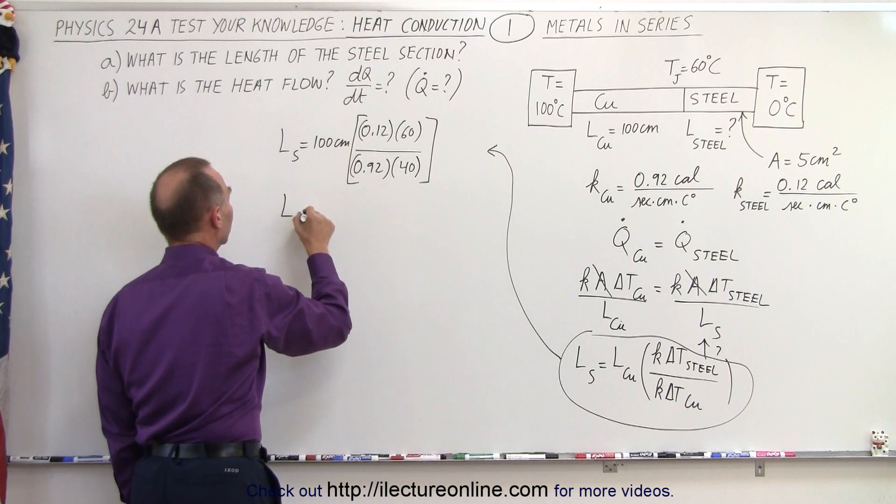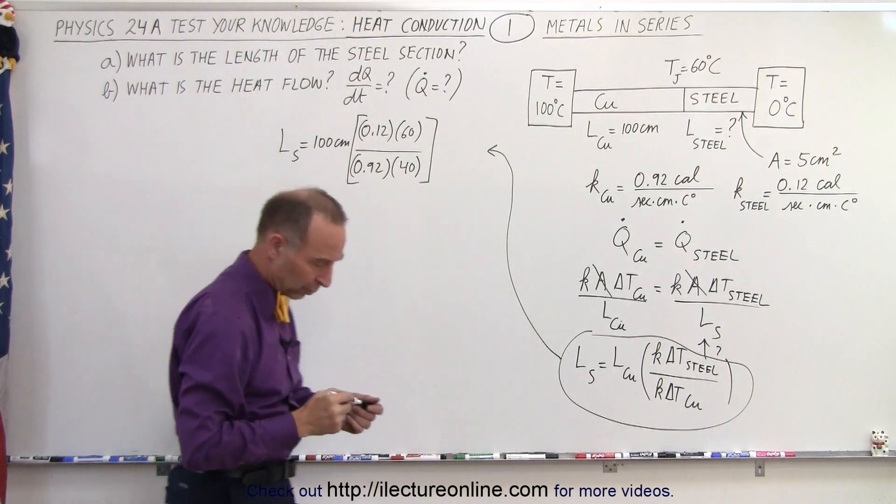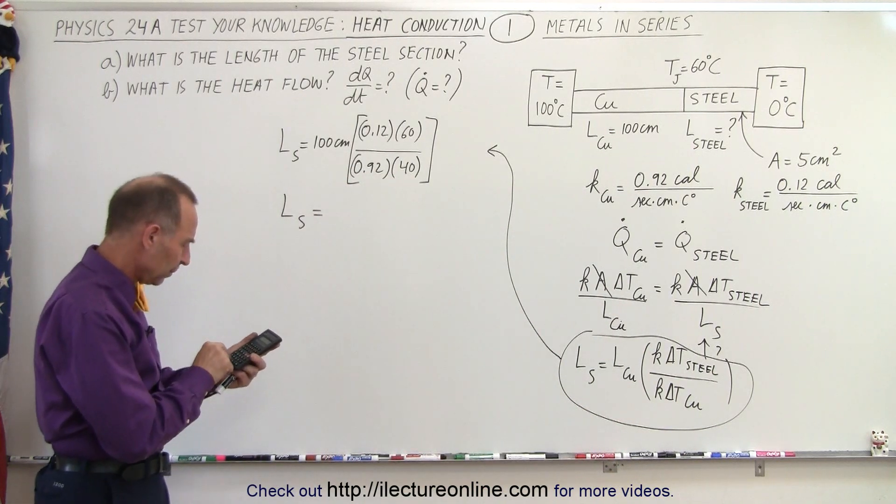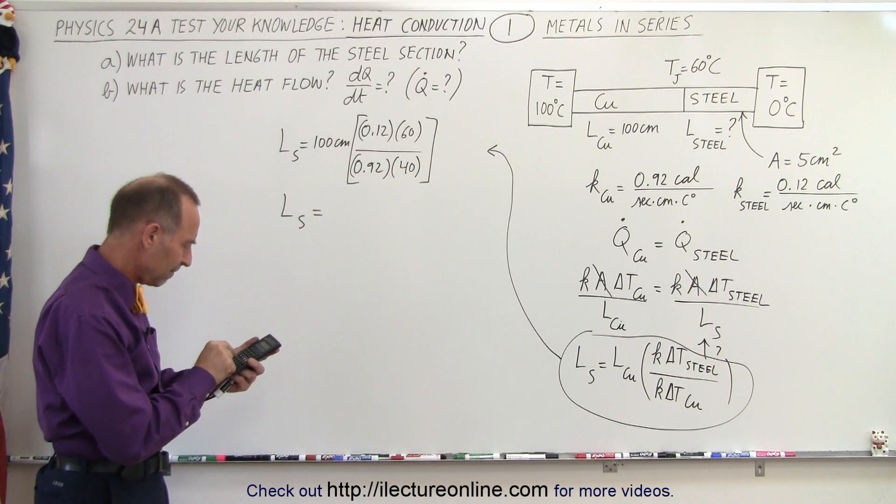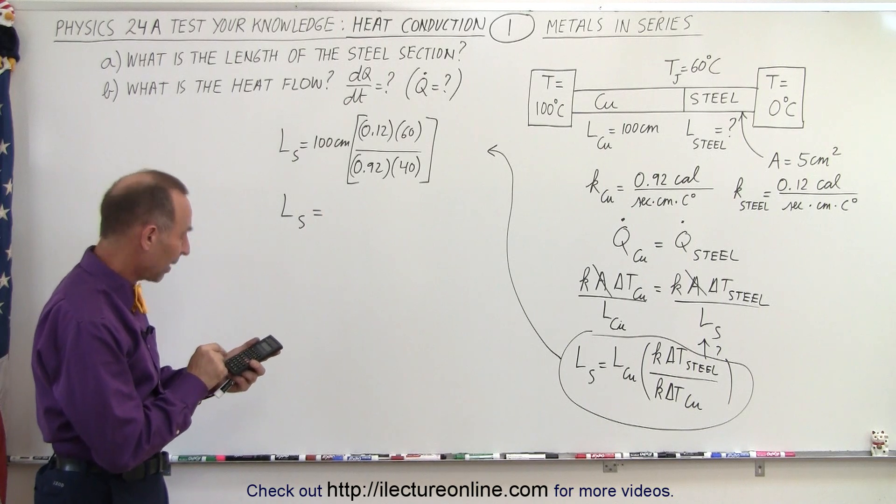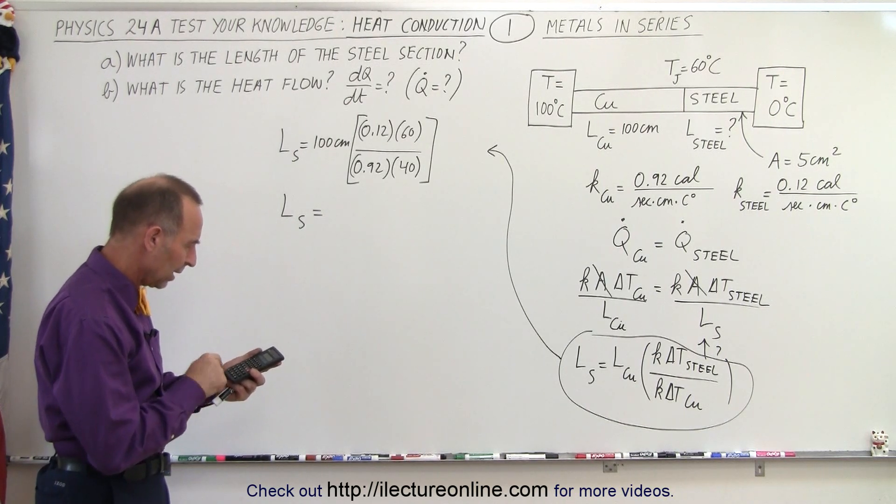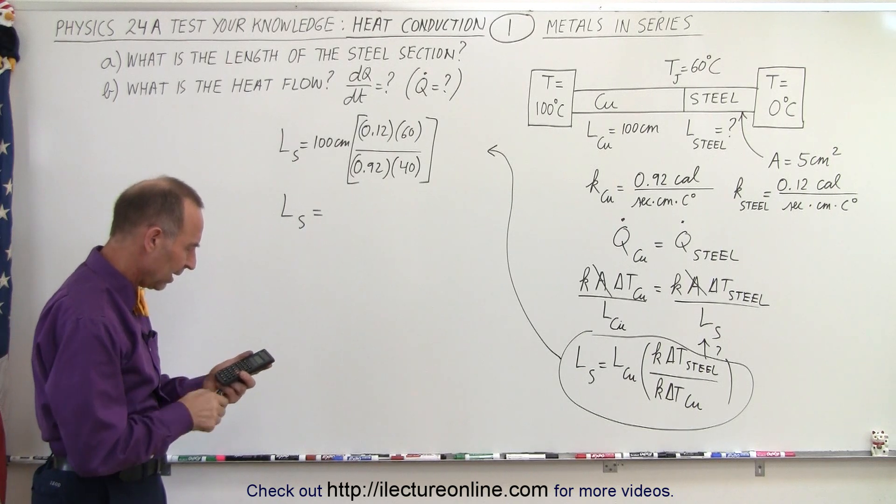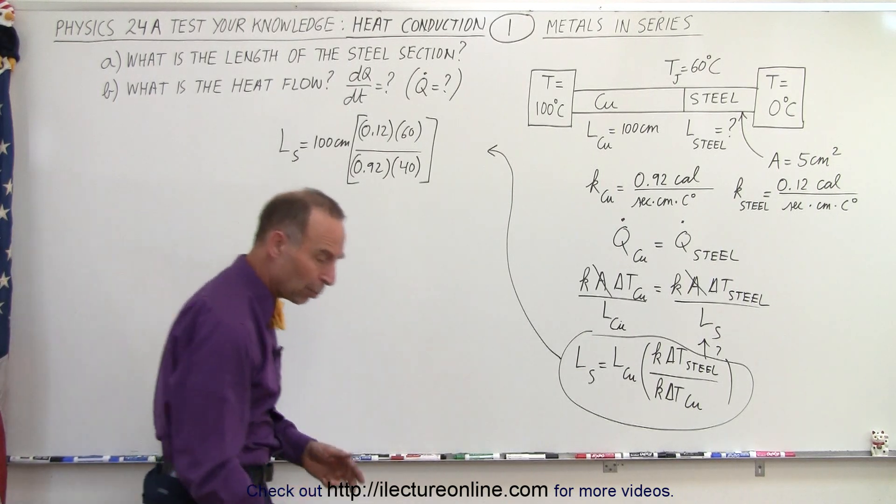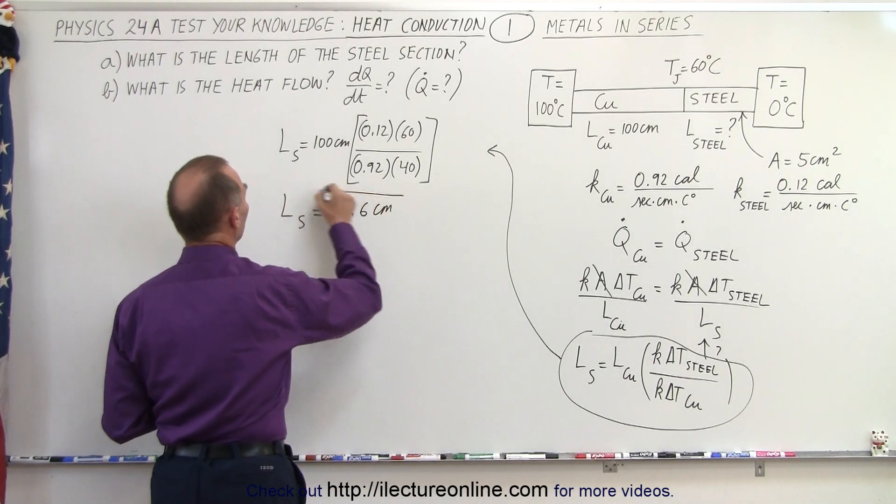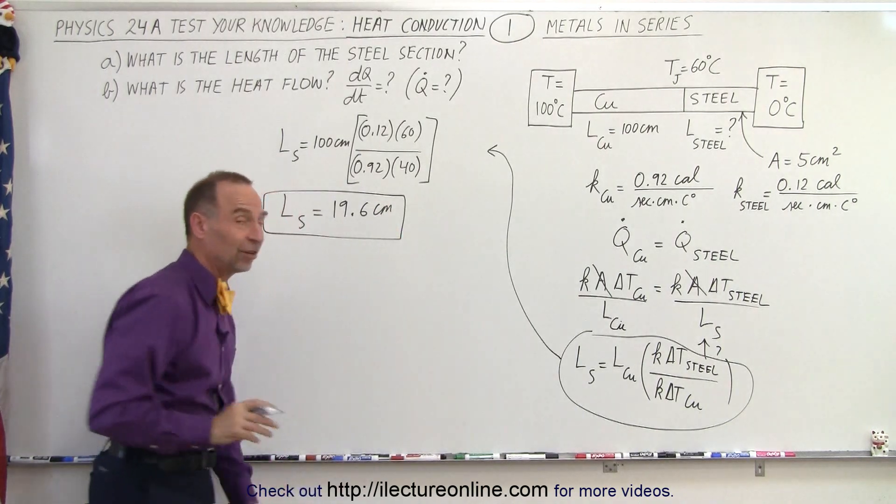And so the length of the steel is, we have 0.12 times 60, divided by 0.92 and divided by 40, and multiply it times 100, and we get 19.56. So L equals 19.6 centimeters, which is the length of the steel section.